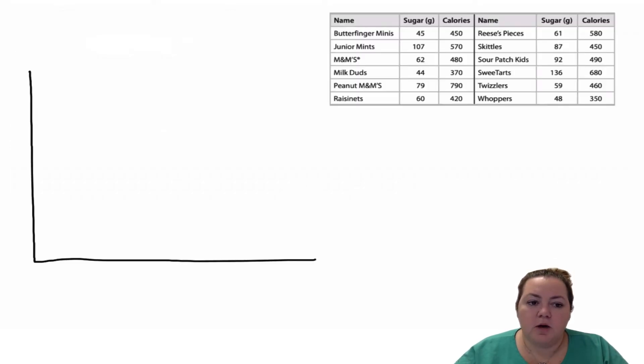Here's our data. I'm going to put the grams of sugar on my x-axis, my horizontal axis, and count by 20 starting at 40.